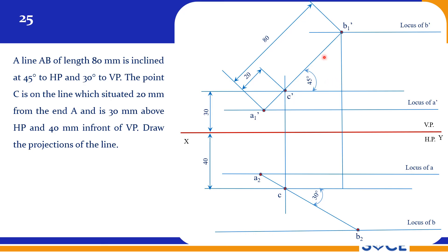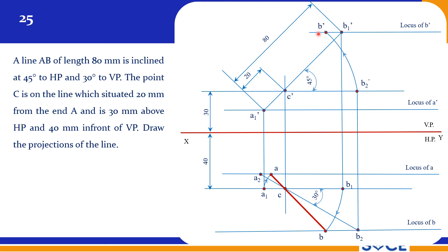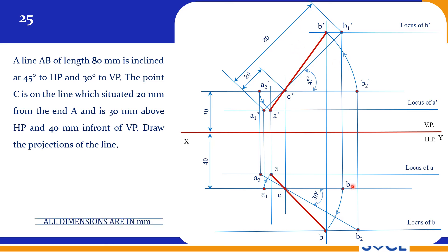In the same way, drop B1 dash down to the locus of C to get B1, then rotate until it meets the locus of B to get the final B point. Rotate on the other side to get A. This is your final top view. Similarly, project to the front view: rotate up to the locus of B dash to get B dash, and rotate up to the locus of A dash to get A dash. This is your final front view. Both sides require rotation — that is the only difference from the standard midpoint problem.